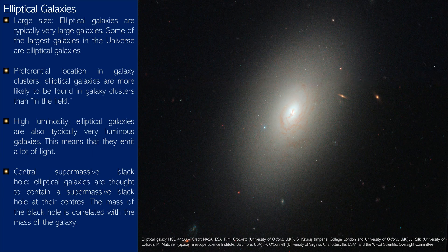Elliptical galaxies are typically very large — some of the largest galaxies in the universe are ellipticals. They are more likely to be found in galaxy clusters than in the field. They are also typically very luminous, emitting a lot of light. And they are thought to contain a supermassive black hole at their centers, with the mass of the black hole correlated with the mass of the galaxy.